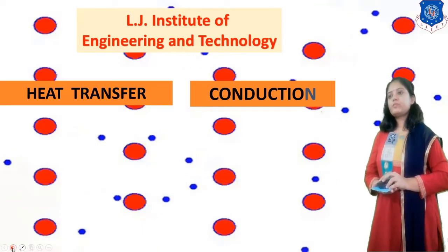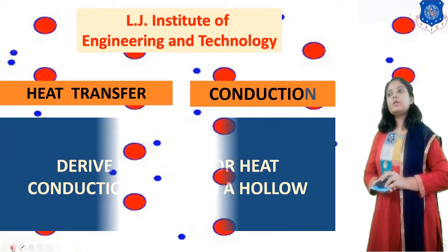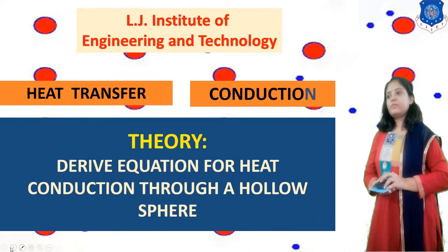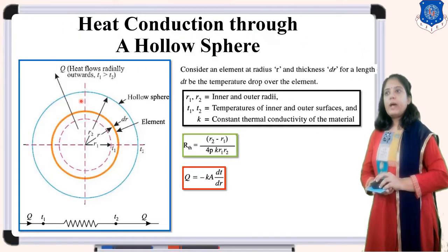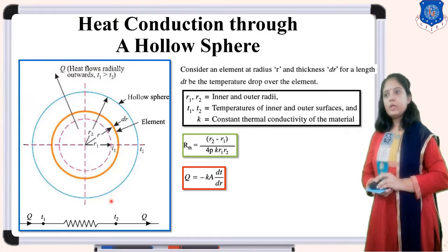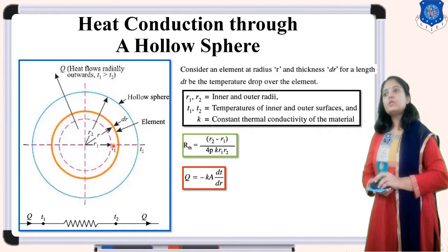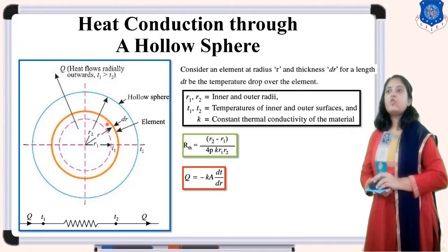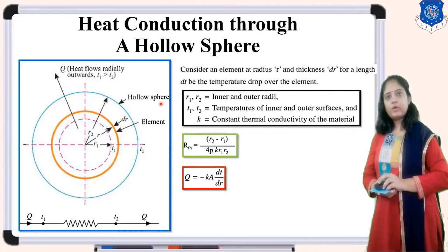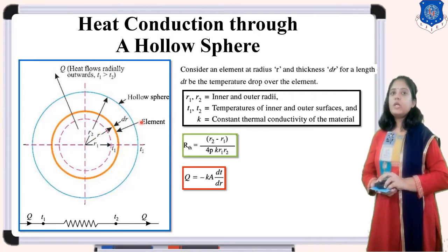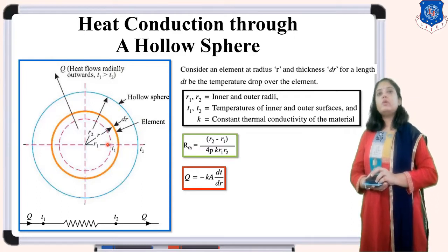Now the first topic: derive equation for heat conduction through a hollow sphere. Here is the diagram of the hollow sphere. This is the outer surface of the sphere, this is the inner surface, and the radius from the inner surface to the center is R1. The radius from the inner surface to outer surface is R2. We take one small strip to find out the heat conduction in the hollow sphere.